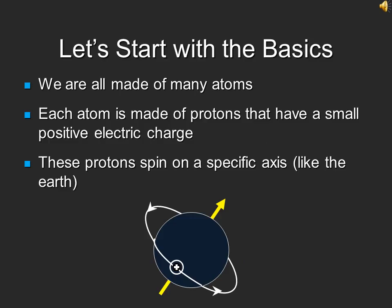Before going into the in-depth physics of MRI, let us first start with some basic physics. As most of you know, we are all made up of atoms. Each atom is made up of protons and electrons. The protons, which have a positive charge, spin about an axis in a similar fashion to that of the Earth.